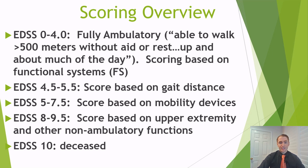The way the scoring works is very complicated, and it's different depending on the level of disability. For lower disability — EDSS 0 to 4 — the person is fully ambulatory, meaning essentially they can walk 500 meters or more without rest or aid. They're up and about most of the day; many of these people are working. The scoring is based on the individual functional systems. Once you get beyond that, the functional systems no longer really matter, and scoring is based on different factors.